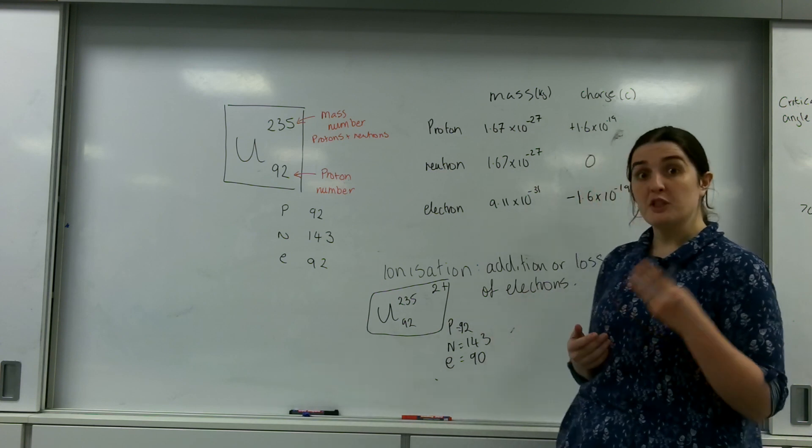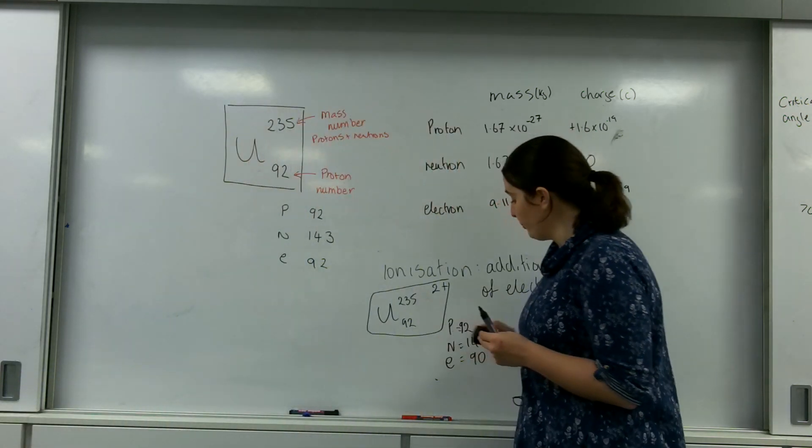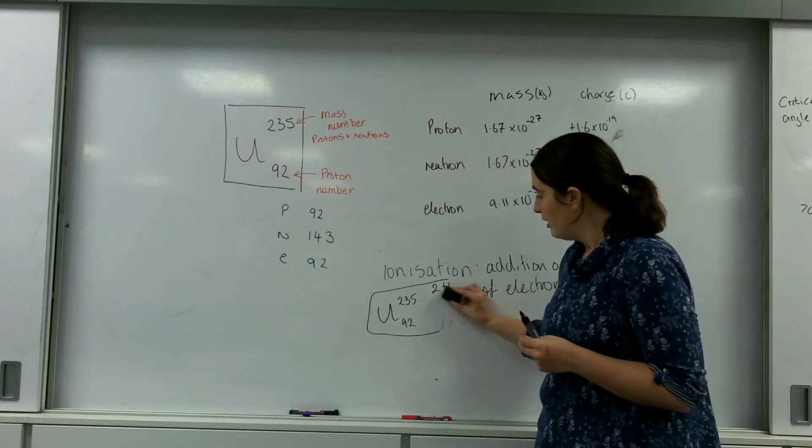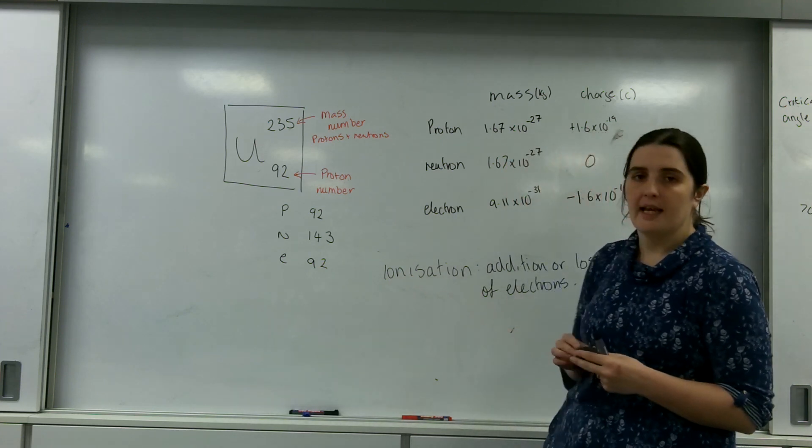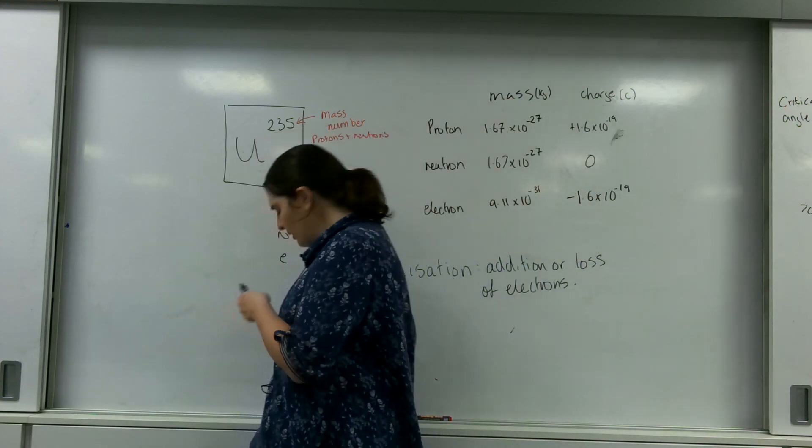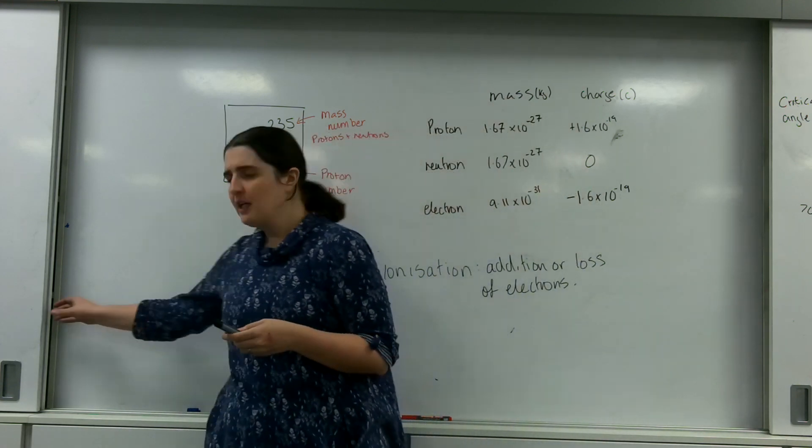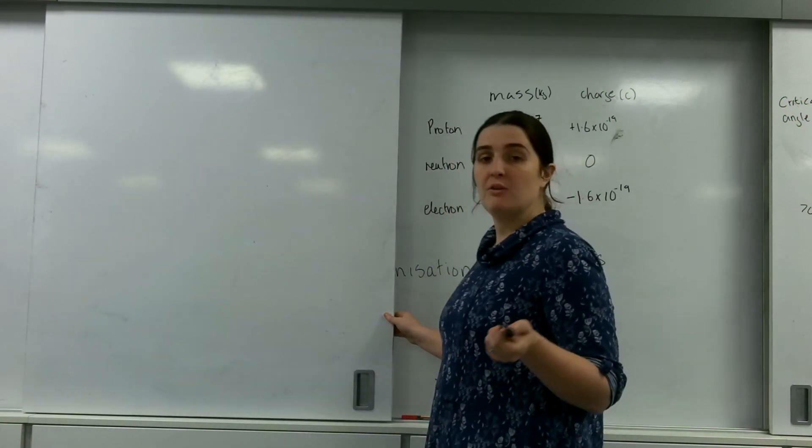Now, we're going to talk about specific charge, and specific charge is a really important part of understanding Coulomb's Law and looking at basically how much charge I'm getting for how much mass I have. And I'm going to use my uranium example to explain how we can do specific charges of different areas.